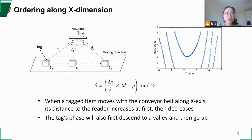Define x-dimension as the moving direction of conveyor. When the tag moves, its distance to the reader increases at first until the reader is right above the tag, then decreases. Accordingly, the tag's phase theta also first descends to a valley and then goes up, like shown in the figure on the right. The bottom of the valley in the curve exactly occurs at the time when the reader is closest to the tag. Therefore, we can infer the order of tags according to the above time.